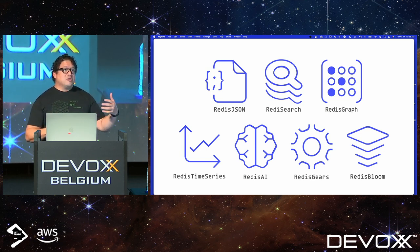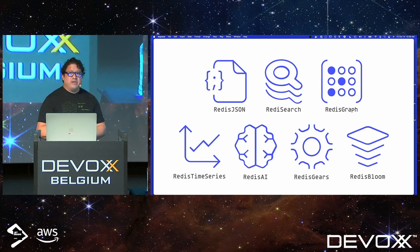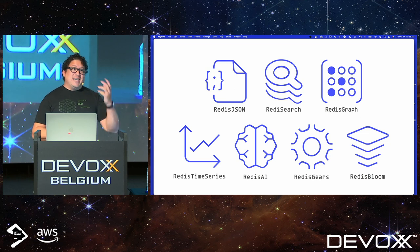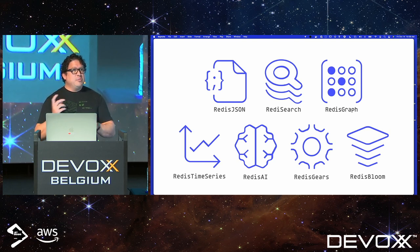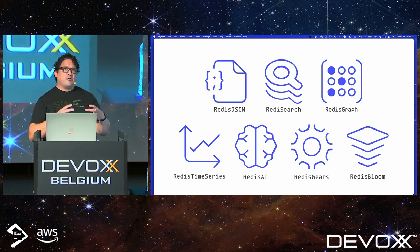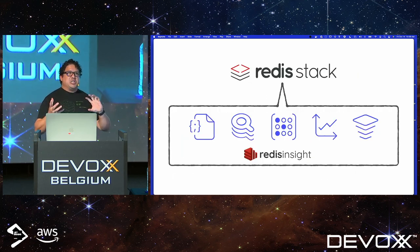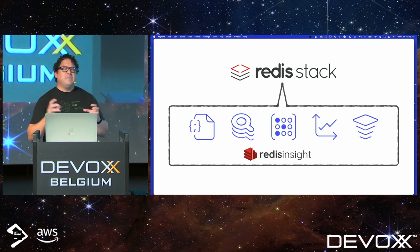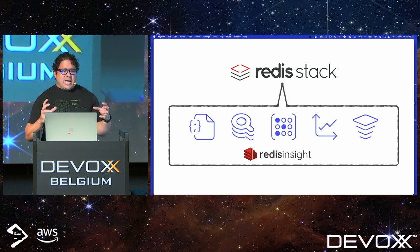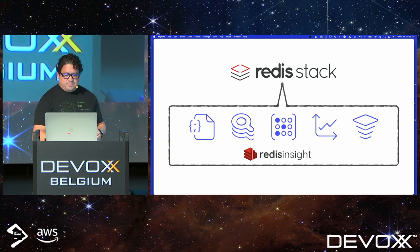We have Redis Graph — my colleague Guy showed that yesterday — which is a graph database inside of Redis. We have a time series database, Redis AI which lets you run inferences in Redis, Redis Gears which is like cloud functions for Redis where you write a bit of code triggered by something in Redis, and Redis Bloom for probabilistic data structures — for when you want to count a large number of things without keeping a large collection. We package five of those modules into a single offering called Redis Stack, which combines JSON, Search, Graph, Time Series, and Bloom.